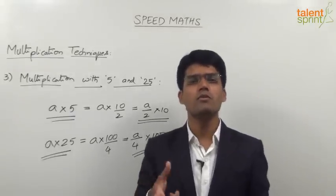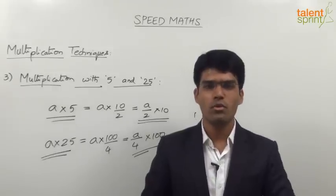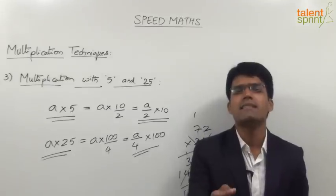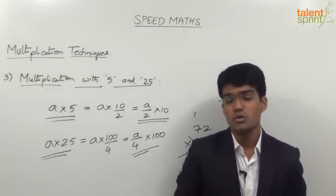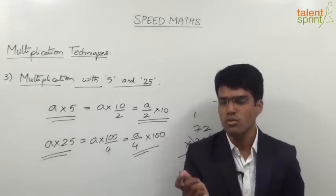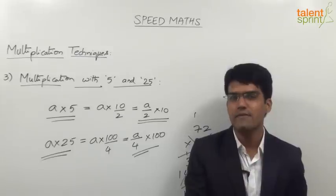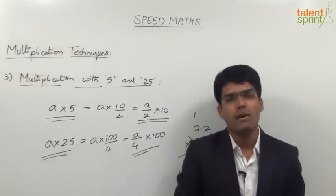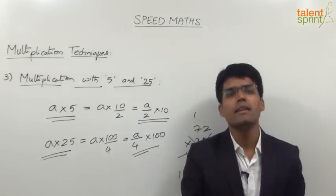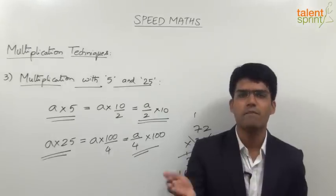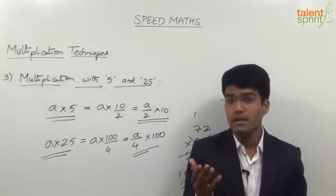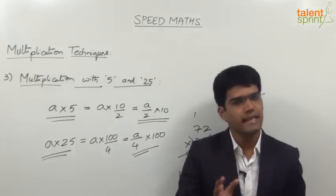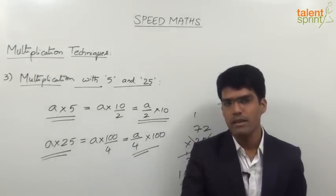81 into 5: half of 81 is 40.5, into 10 is 405. 39 into 5: half of 39 is 19.5, and 19.5 into 10 is 195. When the number is exactly divisible by 2, we simply attach a zero. But when it is not exactly divisible, we get a decimal part and we multiply by 10, which removes the decimal. 33 into 5 is 165, because half is 16.5, and 16.5 into 10 is 165. 34 into 5 is 170, because half is 17, into 10 is 170.